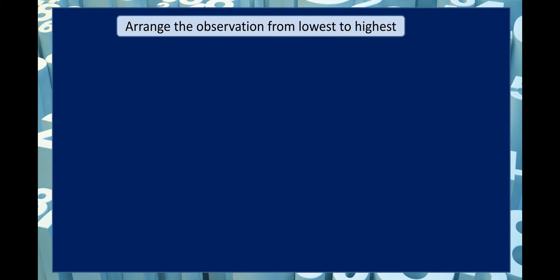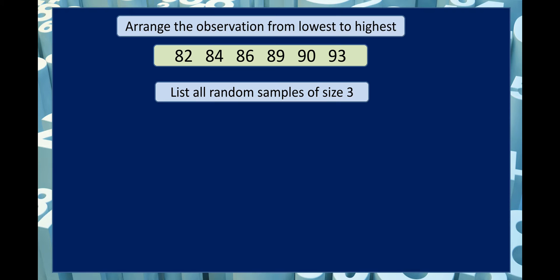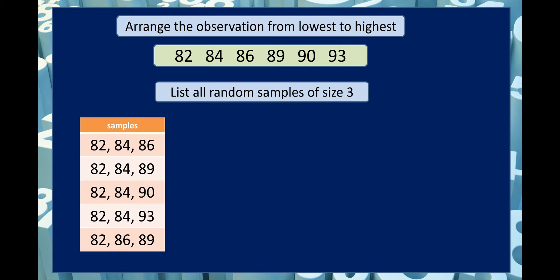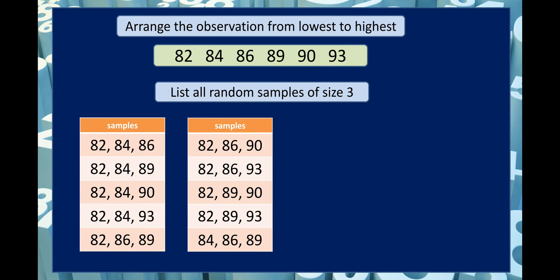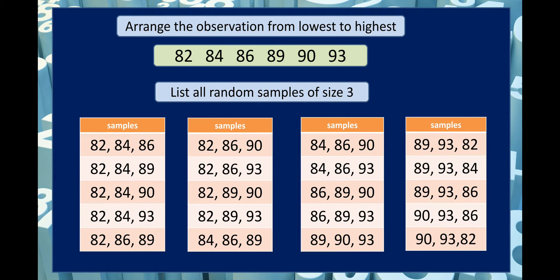We arrange observations from lowest to highest: 82, 84, 86, 89, 90, 93. Then we list all random samples of size 3. The combinations include: {82,84,86}, {82,84,89}, {82,84,90}, {82,84,93}, {82,86,89}, {82,86,90}, {82,86,93}, {82,89,90}, {82,89,93}, {84,86,89}, {84,86,90}, {84,86,93}, {84,89,90}, {84,89,93}, {86,89,90}, {86,89,93}, {89,90,93}, and others to complete the 20 samples of size 3.